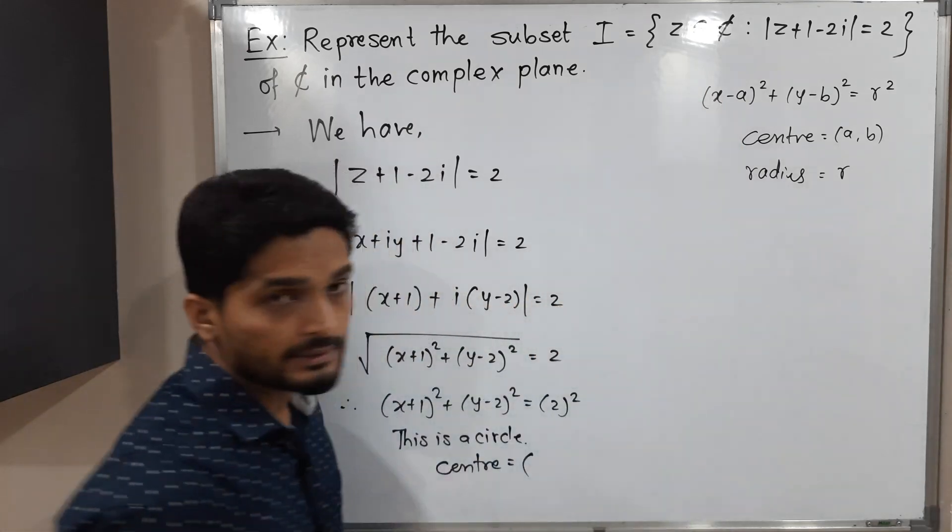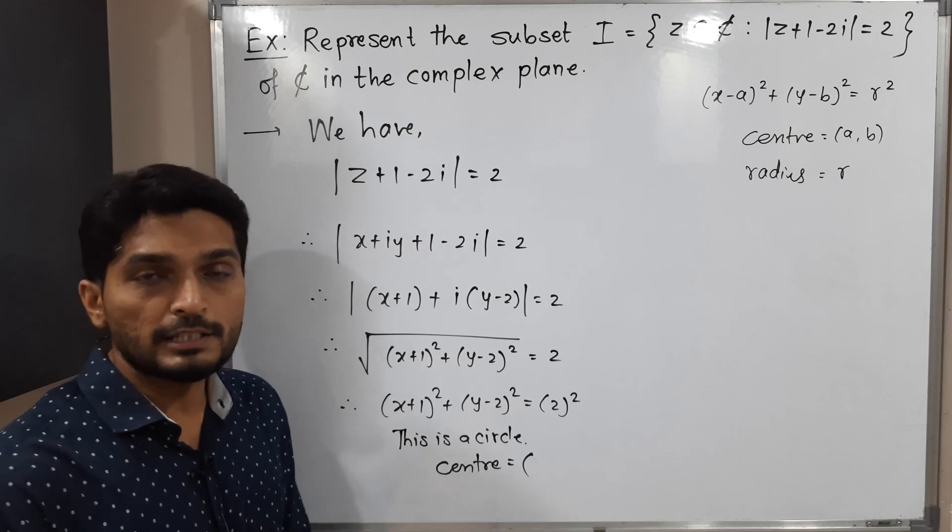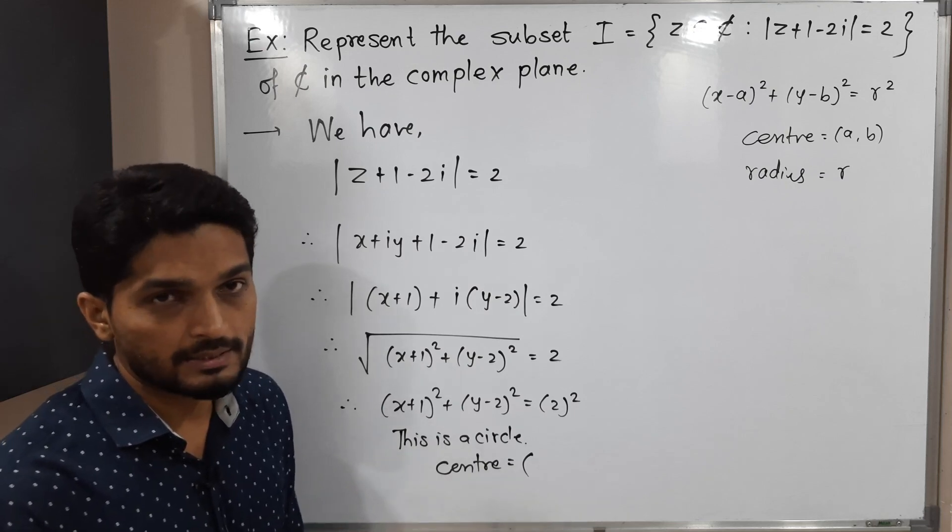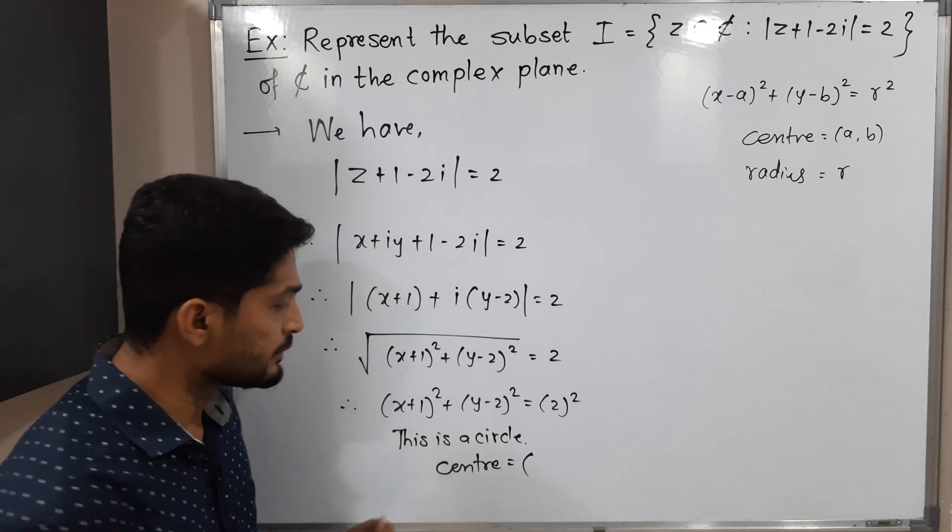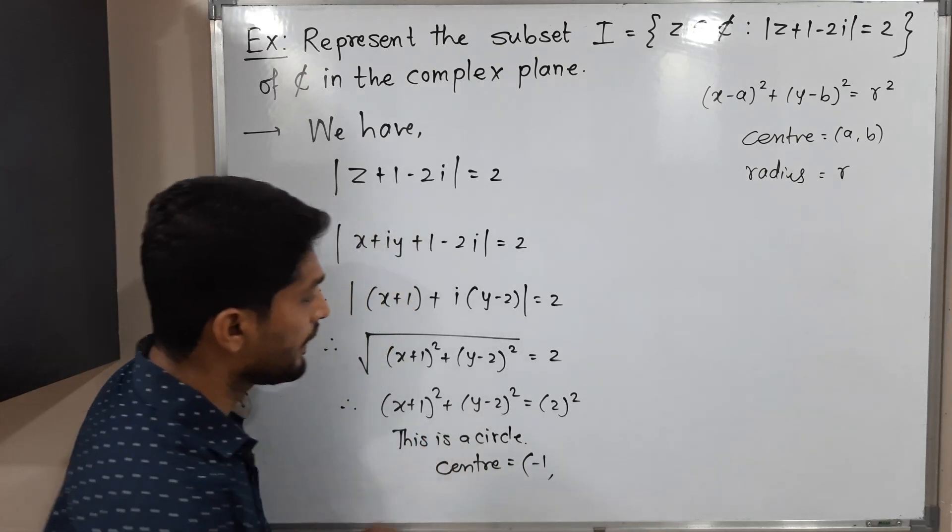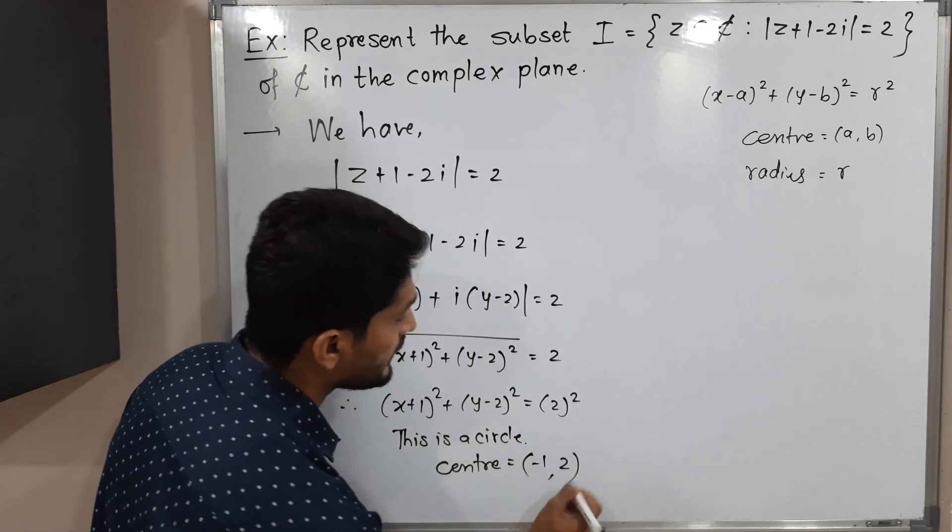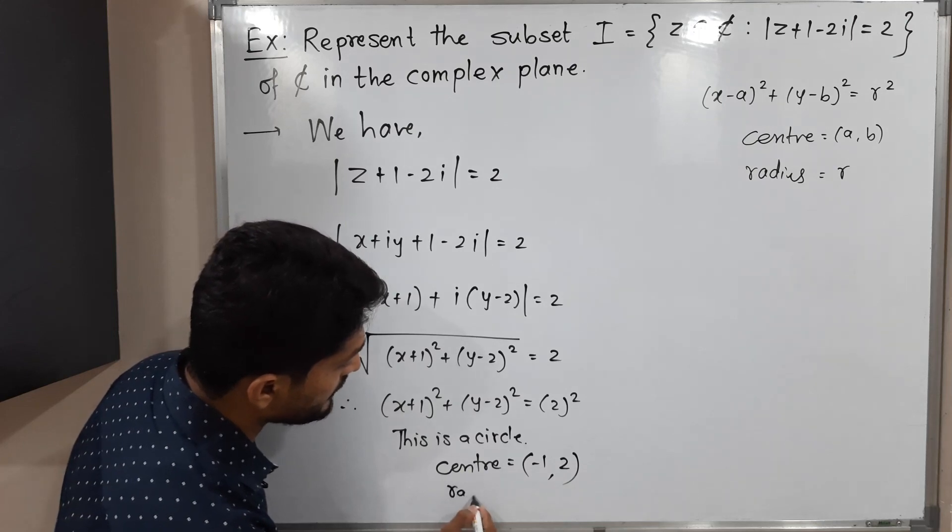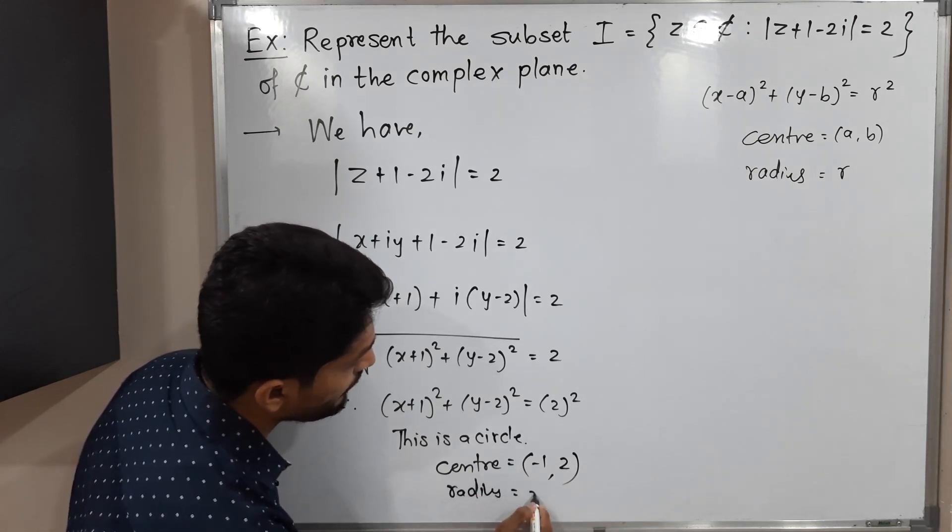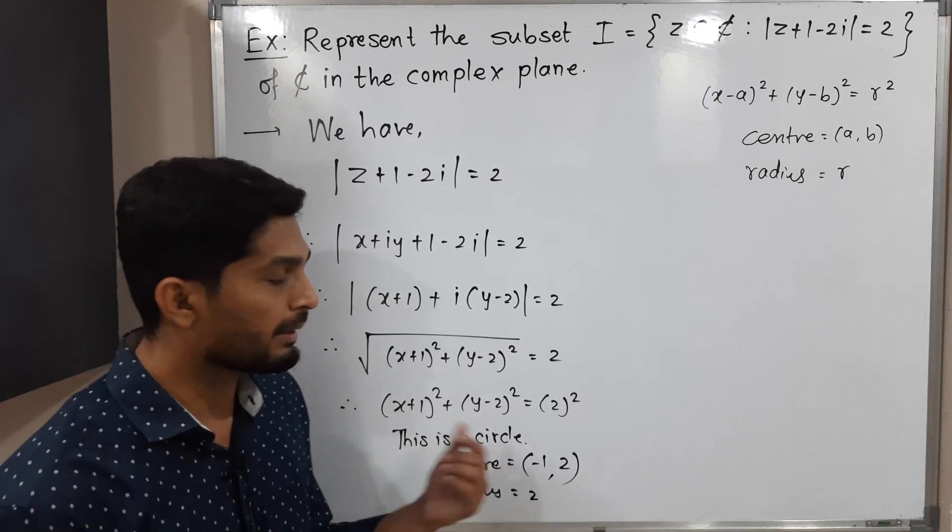That is why the center is -1. If you compare the second bracket, b = 2. So its center is (-1, 2) and radius is 2. Let us draw. The center is -1, 2: minus 1 is here, 2 is here, so the center will be here.